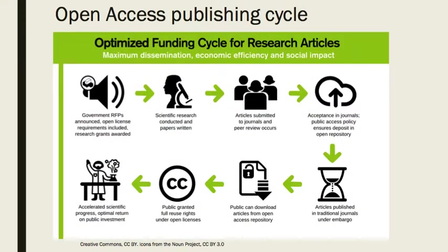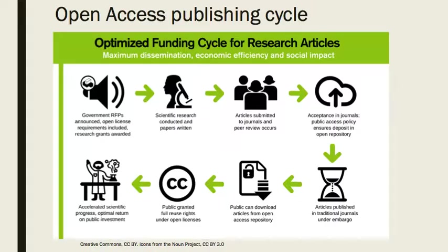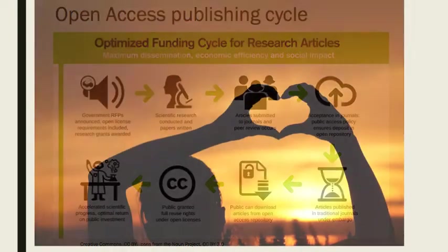There is an alternative model. It is called open access. The open access model is much more flexible. The cycle starts out the same as the traditional model, but the article is also placed in an open repository, where the public can download the article, and we are granted full reuse rights under an open license. This approach is more appropriately aligned to the sharing and advancement of knowledge. It gets the research out there for people to read at a much faster speed than the traditional model, and that's a good thing for all of us.